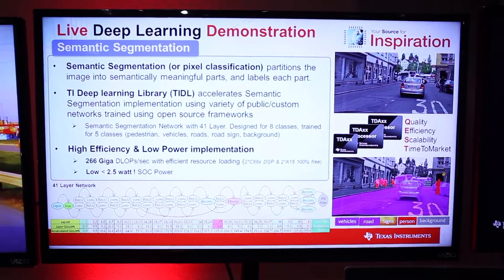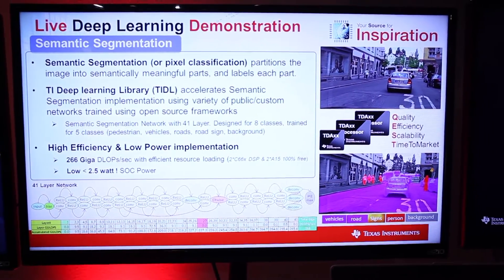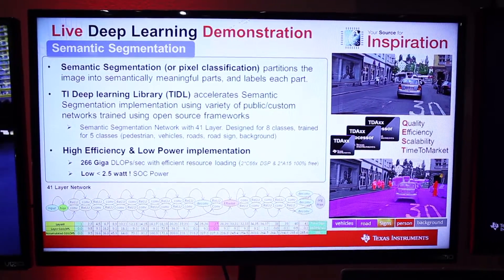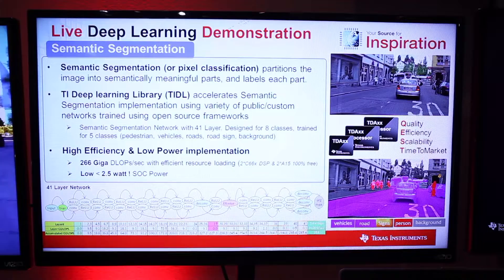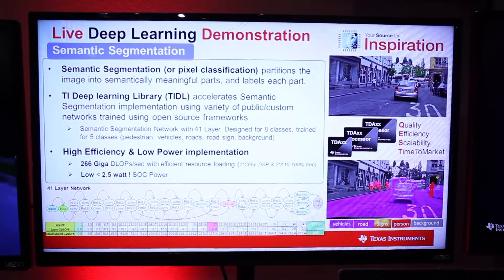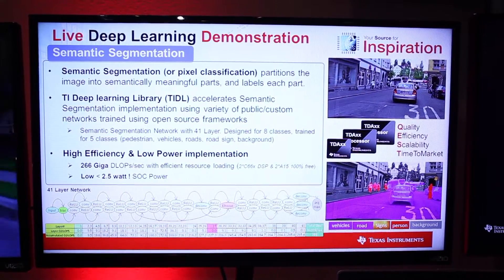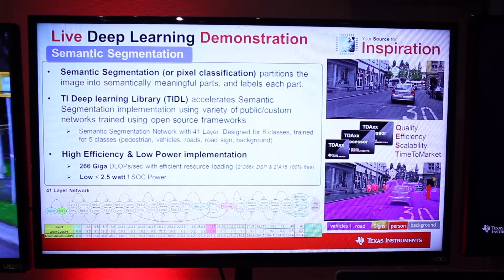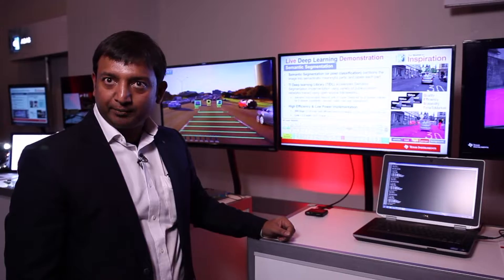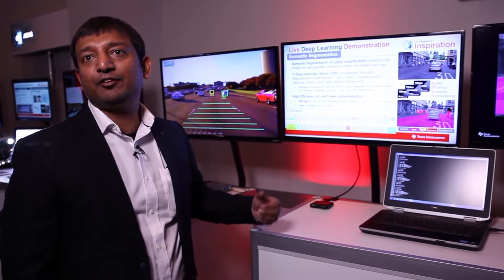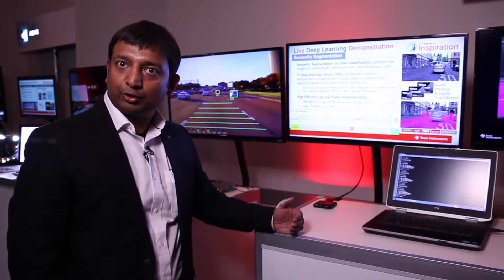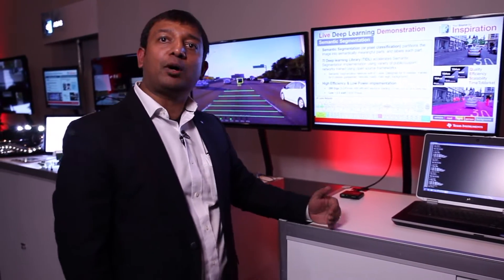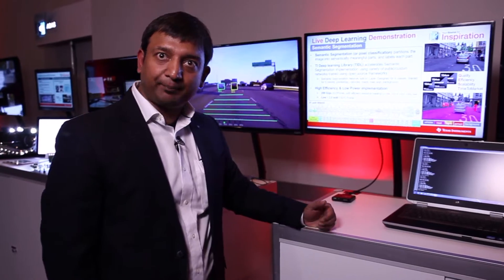Number one, we are able to show an extremely deep 41-layer semantic segmentation network implemented in a very low 2.5 watt power budget. That shows the efficiency of TI cores and the low power we can meet while doing complex operations.